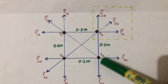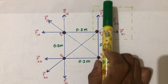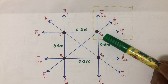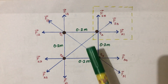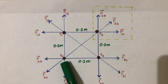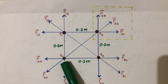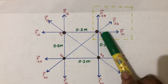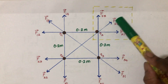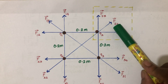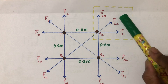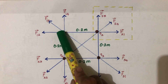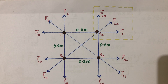Similarly, q3 also pushes q2 away from it, so the force on q2 due to q3 (F23) acts in this direction. There is also the force due to the diagonal charge q4, so the force on q2 due to q4 acts along this direction — since q4 is also positive, it pushes q2 away. Please try to understand the directions of all the forces.